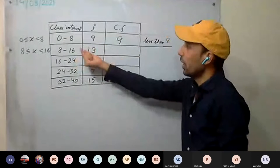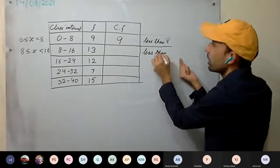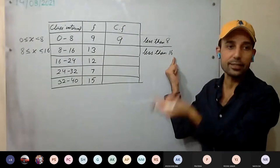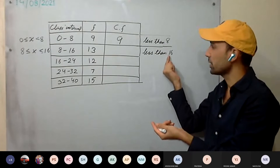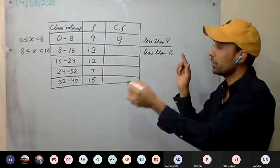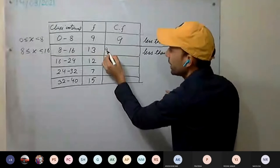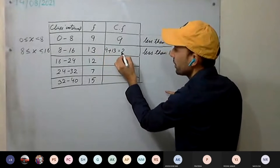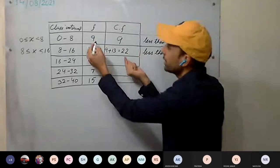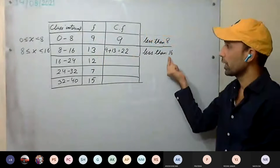For the second row, less than 16 — this includes all students who scored less than 16, meaning those from 0 to 8 are also included. So it will be 9 plus 13, which equals 22. So 22 students have scored less than 16.